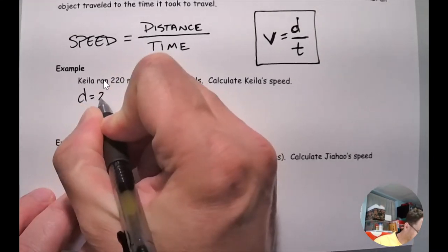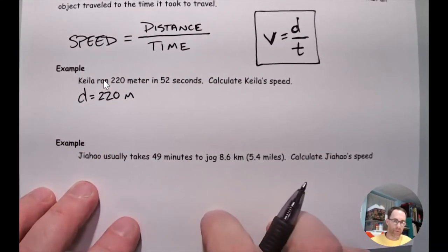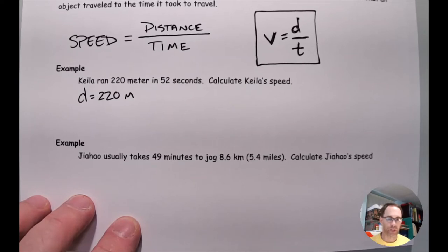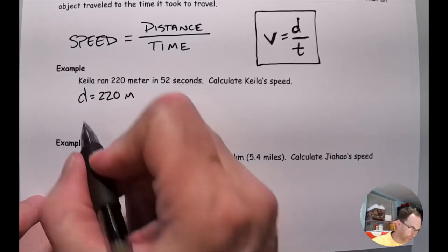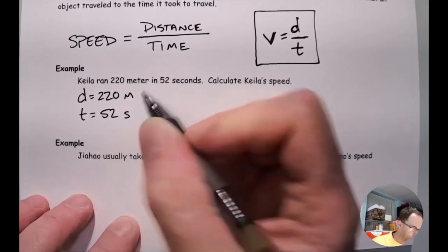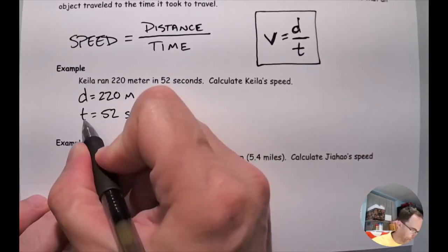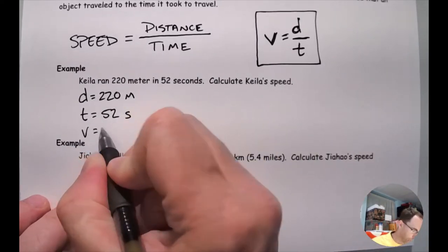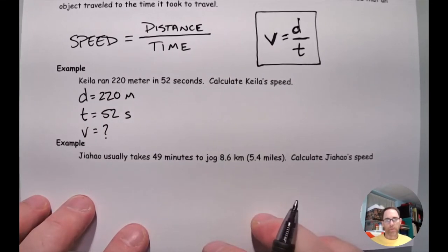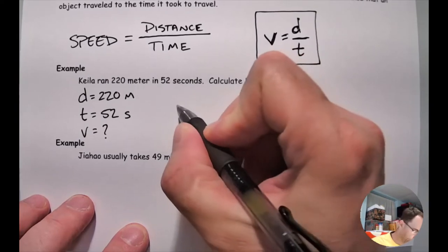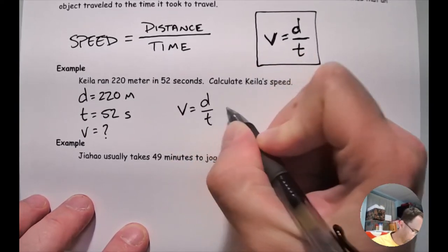The second thing it told me is that she did this in 52 seconds. Seconds is a unit of time, so T equals 52 seconds. And what are we looking for? It says calculate Kila's speed, so we use the letter V for speed. Once I identify what I'm looking for, I write the equation: V equals D over T.